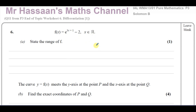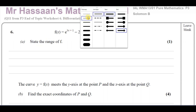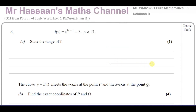The first part of the question is more related to functions, and it says state the range of the function f. So f of x equals e to the power of 3x plus 1 minus 2, where x is an element of all real numbers — state the range of f. When thinking about the range of a function, you've got to think about what the function looks like when you sketch it.